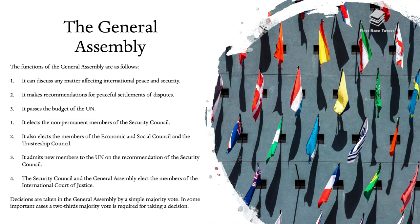The functions of the General Assembly include: discussing any matter affecting international peace and security and making recommendations for peaceful settlements of disputes; passing the budget of the UN; electing the non-permanent members of the Security Council; electing members of the Economic and Social Council and the Trusteeship Council; and admitting new members to the UN on the recommendation of the Security Council. The Security Council and the General Assembly together elect members of the International Court of Justice. Decisions are taken by a simple majority vote, though in some important cases a two-thirds majority is required.